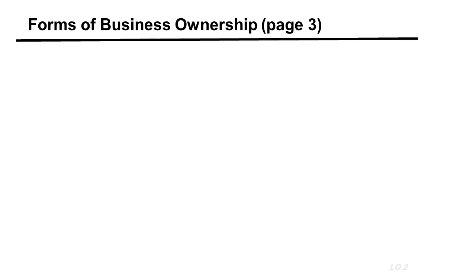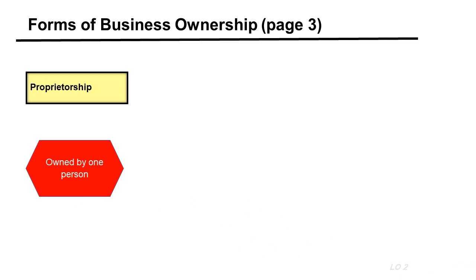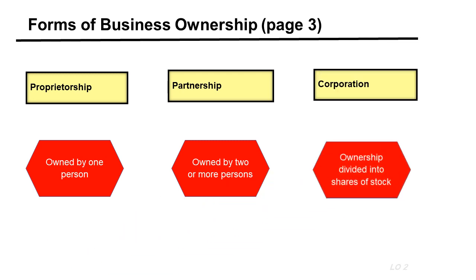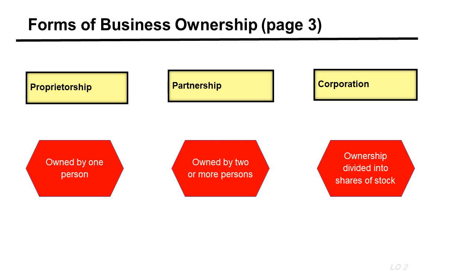We have different forms of business ownership. We have proprietorship, which is the type of company owned by only one person. We have partnership, which is owned by two or more persons. And we have the corporation, where ownership is divided into shares of stock. During this whole semester, we will be talking mostly about the proprietorship, which means owned by only one person.